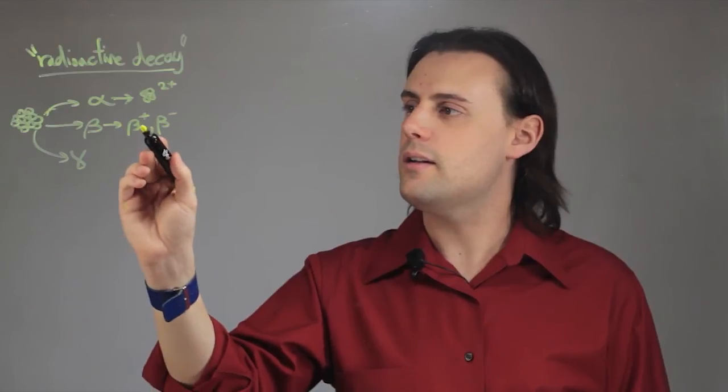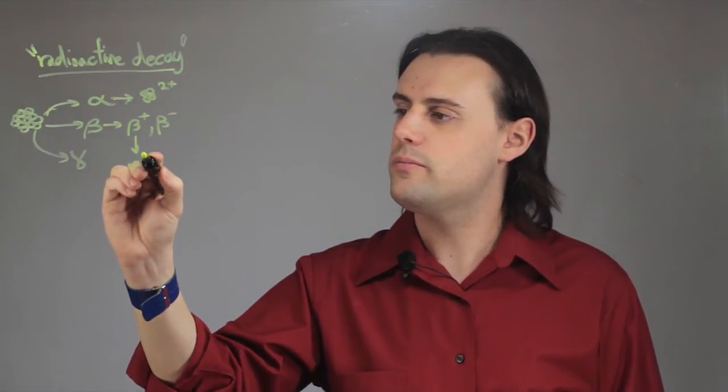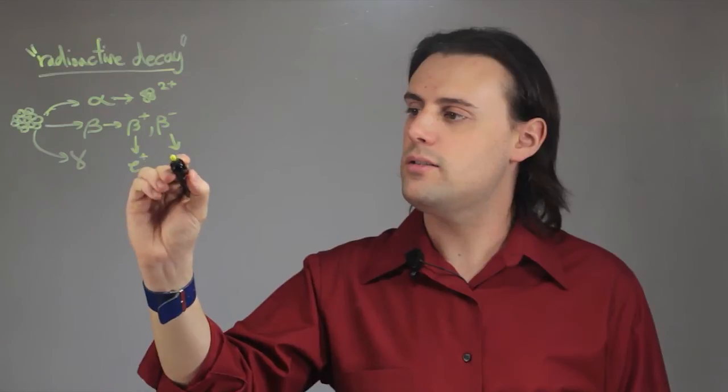In beta decay, beta plus is a positron, and beta minus is an electron.